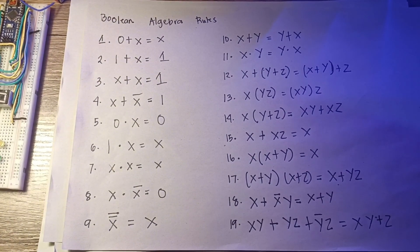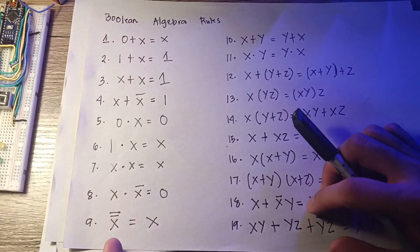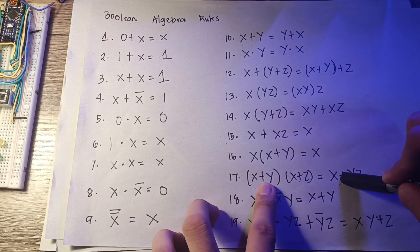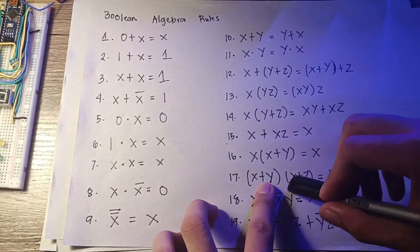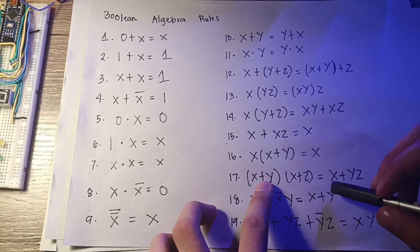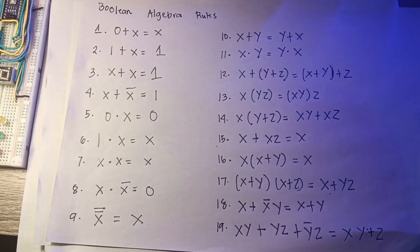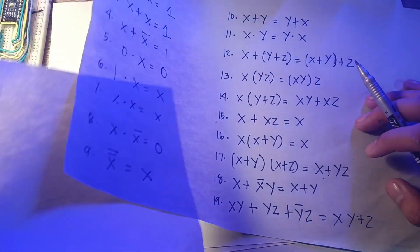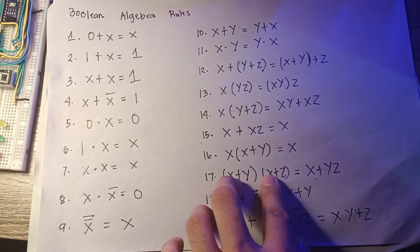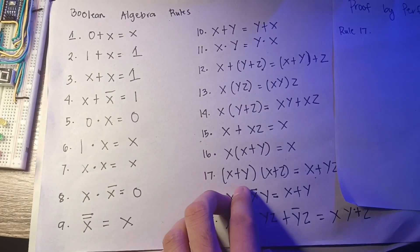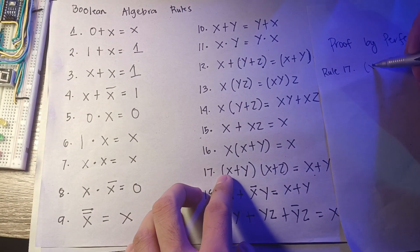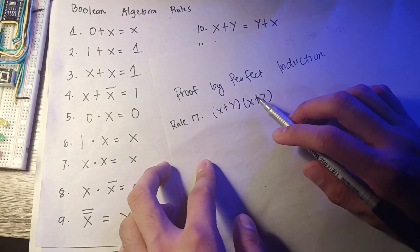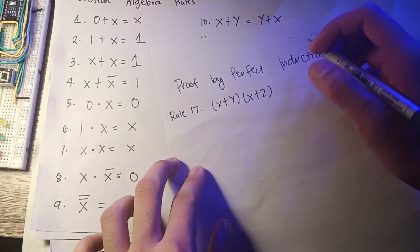The next thing we will discuss is the proof by perfect induction. Notice that rule 17 does not apply to normal algebra. The rule may be obtained from the preceding rules using proof by perfect induction. In order to prove rule 17, we will do it by perfect induction. Rule 17 is: x plus y, times x plus z.